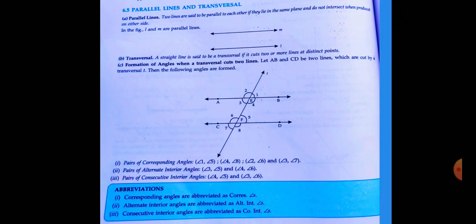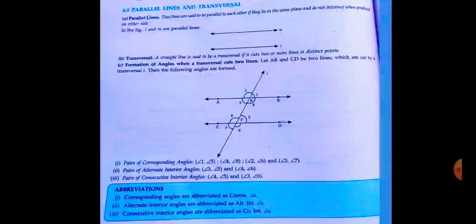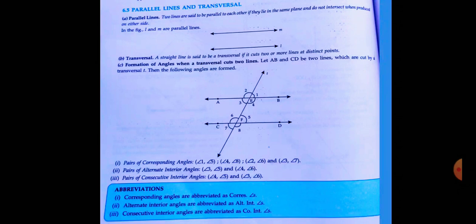Parallel lines and transversal: Two lines are set to be parallel to each other if they lie in the same plane and never meet. A transversal is a line which intersects two or more lines at distinct points. This transversal line cuts this line at A and this at B.